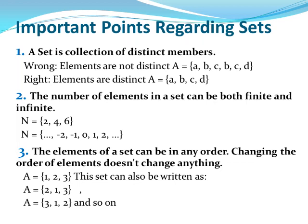Important points regarding sets. A set is a collection of distinct objects. Wrong example: Elements are not distinct. A = {a, b, c, b, c, d}. Here a and b are repeated. Right: A set is A = {a, b, c, d}. Here there is no repetition, all elements are distinct.